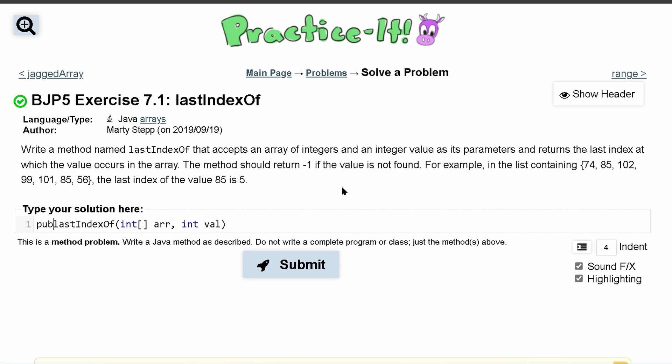So let's do public - we don't need to make it static but we could. We'll just do public and it's returning an integer, so public int, and this is our header right here.